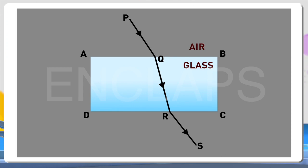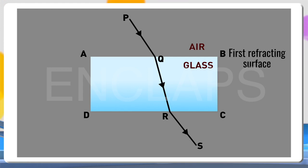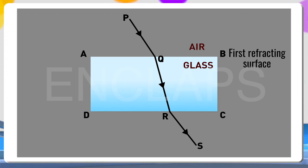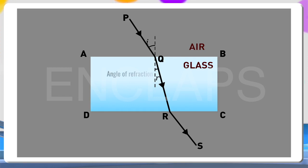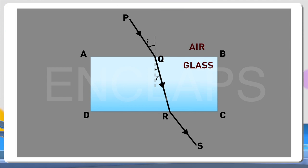Let's consider this as two cases. In the first case, AB is the surface of separation of air and glass — that is, the first refractive surface. Q is the point where refraction is happening and a normal is drawn at Q. PQ is the incident ray and QR is the refracted ray. Angle i is the angle of incidence, which is the angle between the incident ray and the normal. After refraction, the ray makes angle r, the angle of refraction, which is the angle between the refracted ray and the normal. The angle of incidence is greater than the angle of refraction at the air-glass interface.